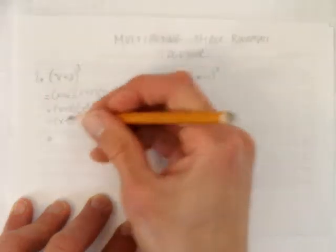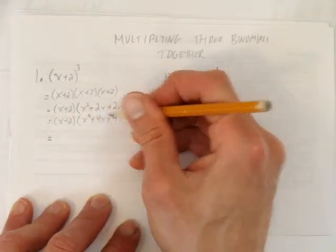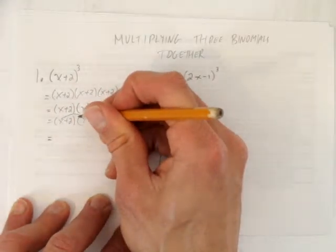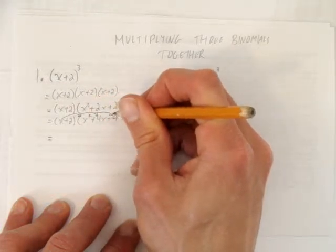Now, how do you multiply this x plus 2 times this bracket? Multiply the x times each thing. Let's start with that.